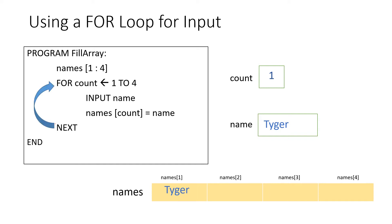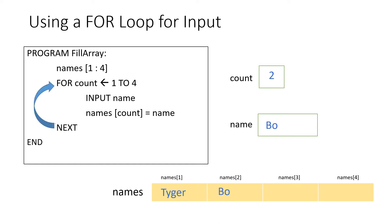Back to the top of the for loop, count goes to 2. We input a name — 'Bow'. names[count] = name, so names[2] = 'Bow', and Bow is copied into cell 2. Back to the top of the loop, count gets the value 3. We input a name — 'Mark'.